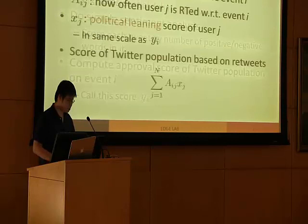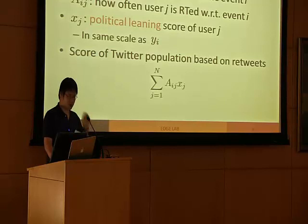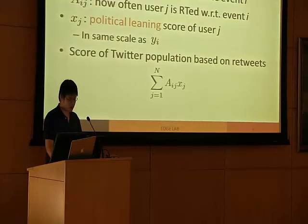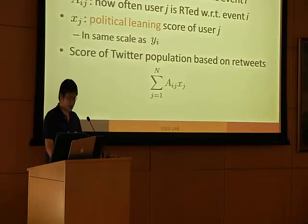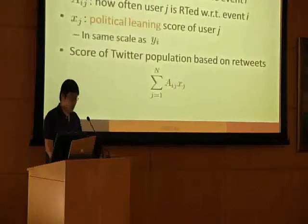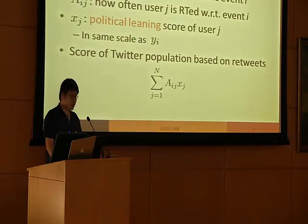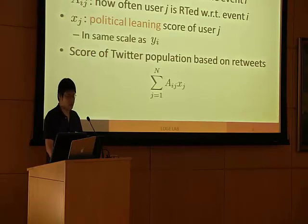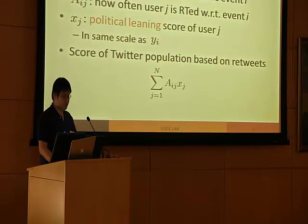At the same time, we also compute a retweet approval score. On the same event, we get a set of relevant retweets, and define A_IJ as the proportion of retweets by user J that are relevant to the event, computed over all users whose political leaning we want to estimate. For every such user J, we let X_J be the political leaning score of that user, on the same scale as Y_I defined previously. The retweet approval score is then calculated as the average of the political leaning scores X_J, weighted by A_IJ.